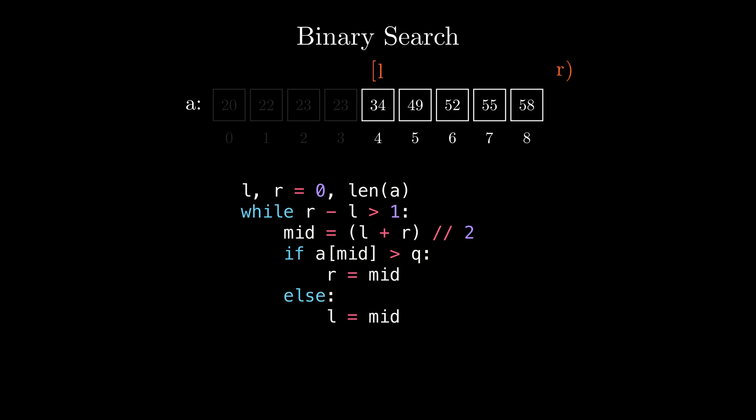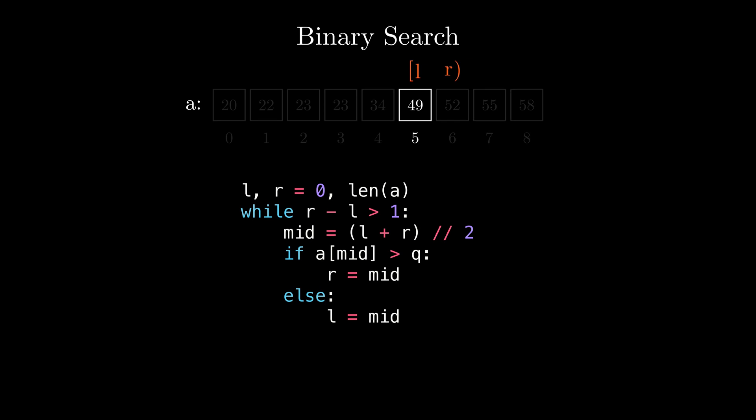Finally, when there are no elements between L and R that we can consider, the final answer is going to be the element at index L if it's equal to the query number. If it isn't, we can print minus 1 to indicate that the query number wasn't found in the array.